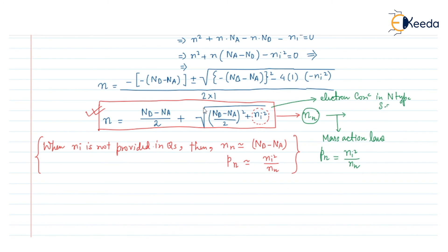This is the electron concentration in the n-type semiconductor, and this is the hole concentration in the n-type semiconductor. This is all about the electron concentration and hole concentration calculation in an n-type compensated semiconductor.